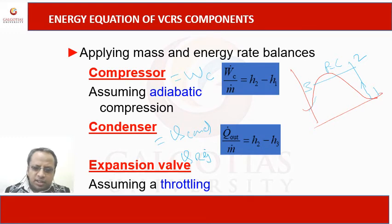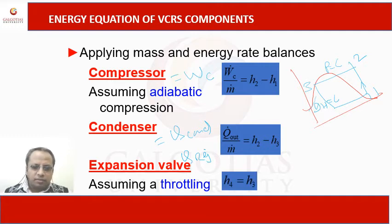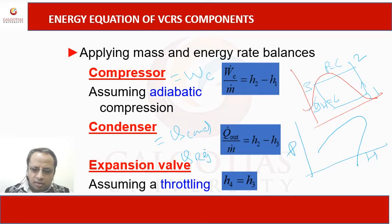For the expansion valve, this is a constant enthalpy process — there is no change in enthalpy, so there is no energy equation as such. We only achieve the low temperature of the refrigerant through this process. Because this is the constant enthalpy process, H4 equals H3. If we look at the pH chart of the refrigerant, at stages 3 and 4, H3 equals H4.